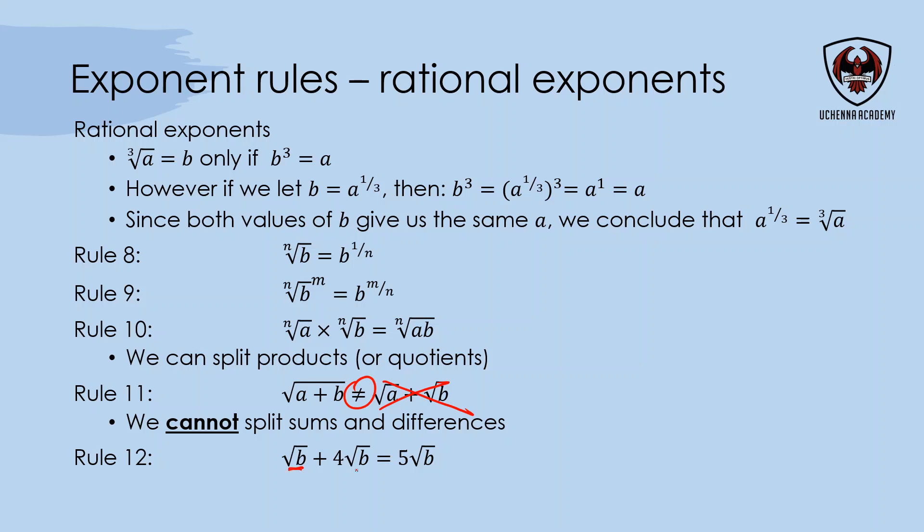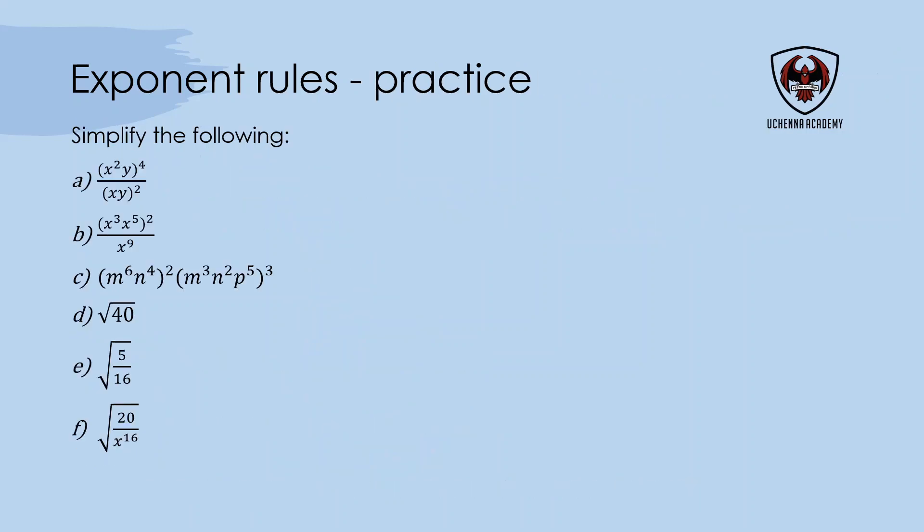Like radicals—things underneath a square root or nth root can be added as long as they're the same. The radical has to be the same, and we can treat them as like terms. Let's do some problems here.